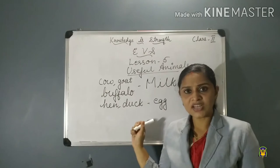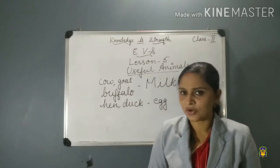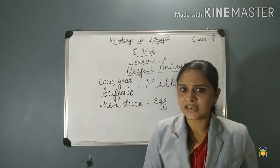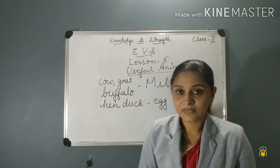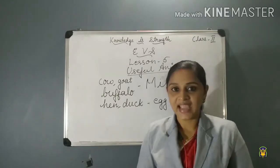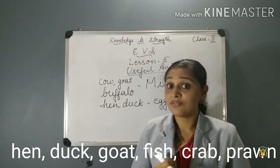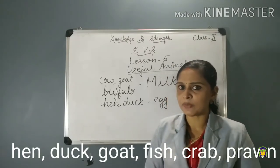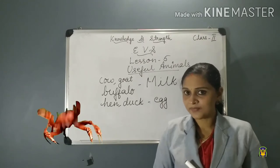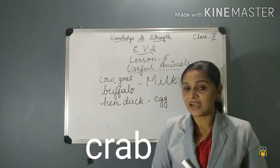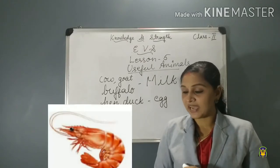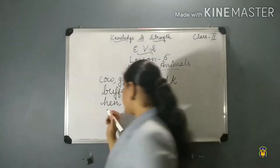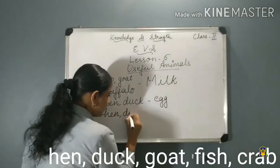So we get milk, eggs — and what other thing do we get from animals? Yes, meat! Which animals give us meat? Hen, duck, goat, fish, crab, and prawns also give us meat. The spelling of prawns is P-R-A-W-N-S. Look at the picture — this is a crab.